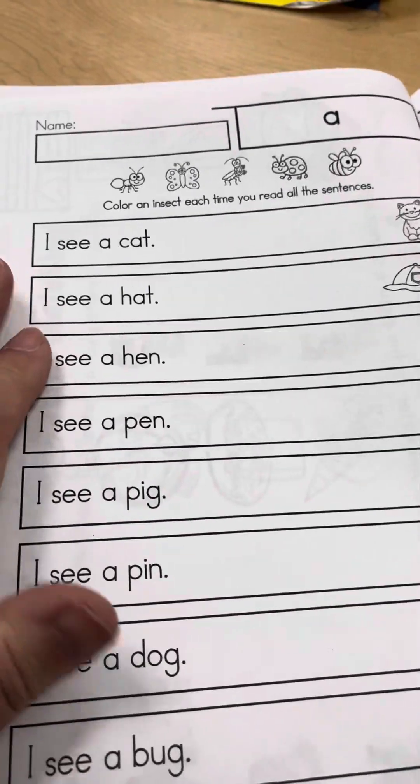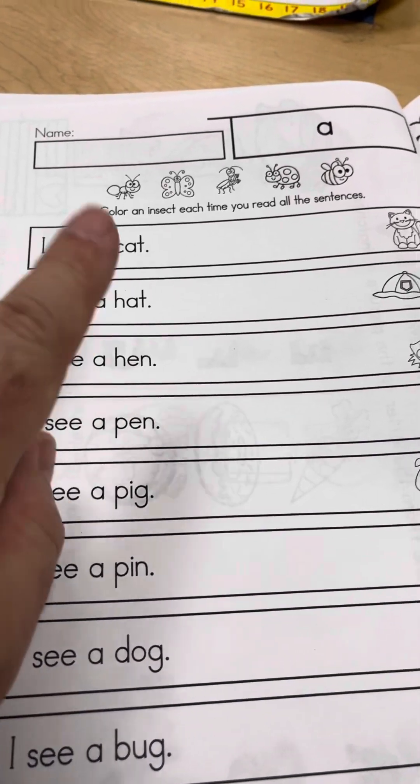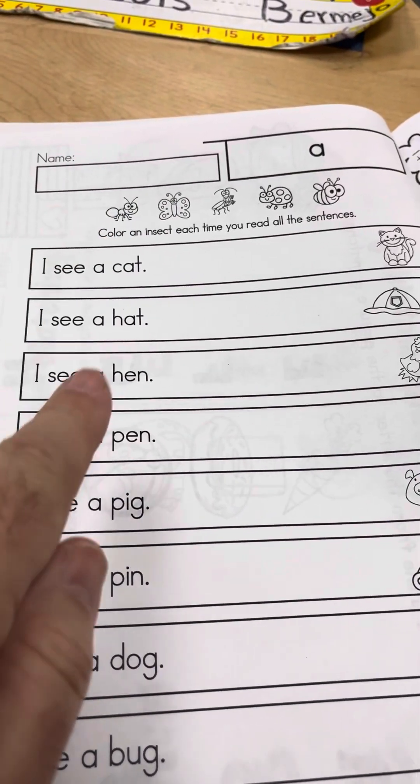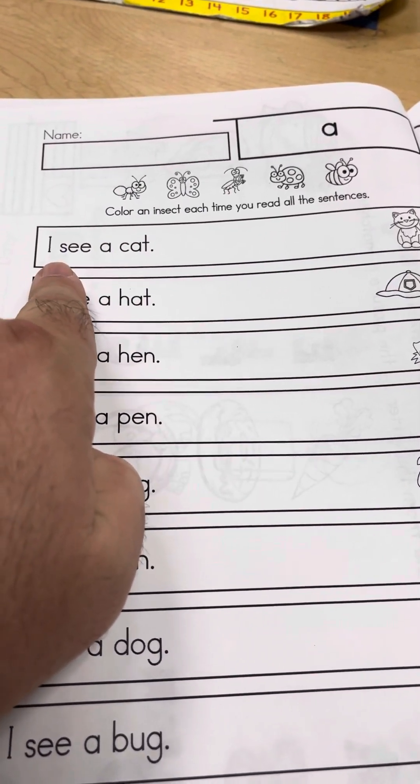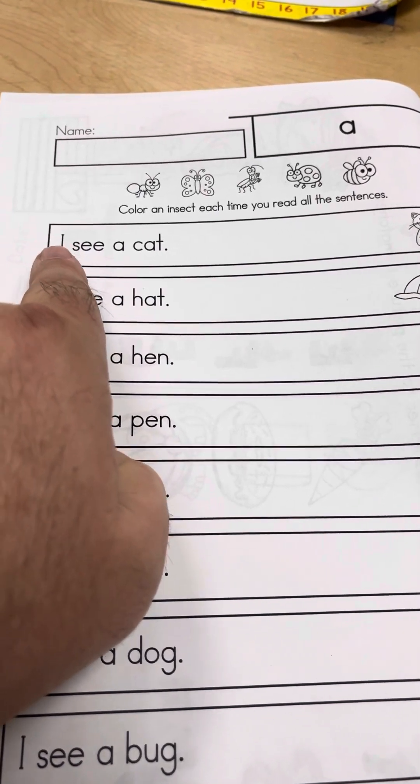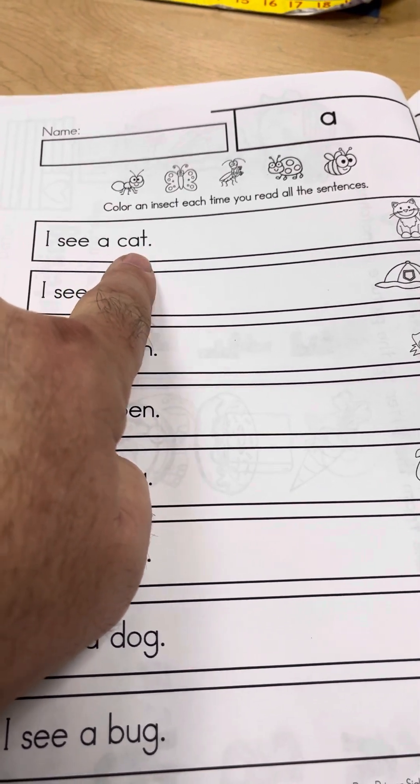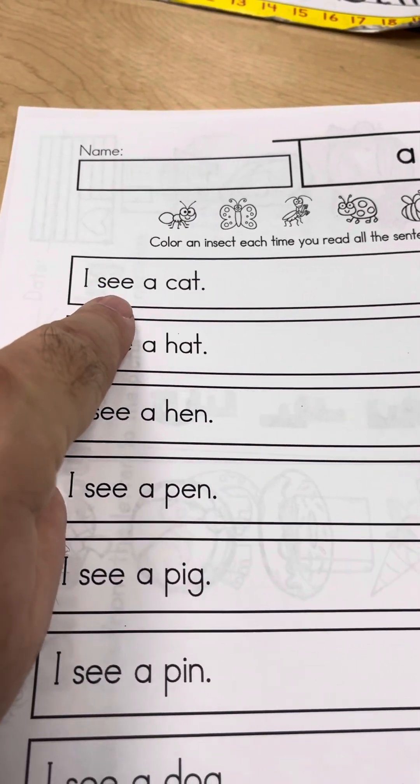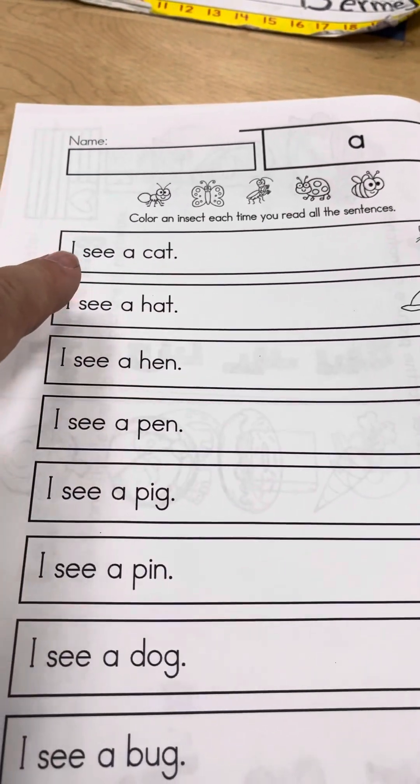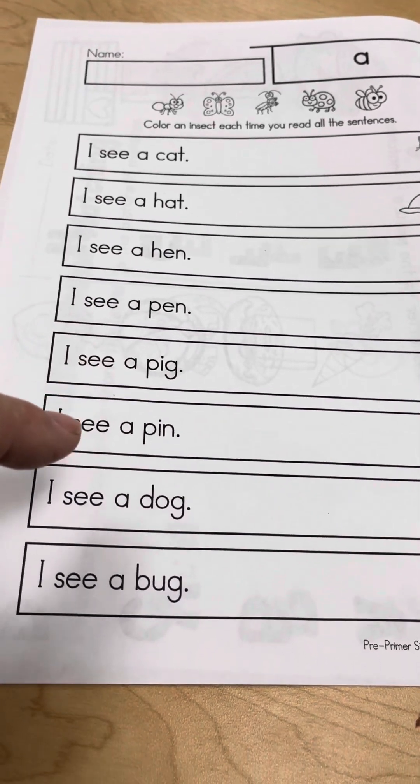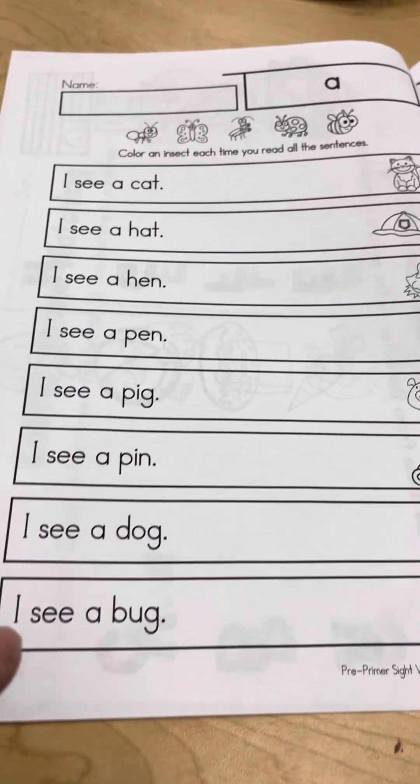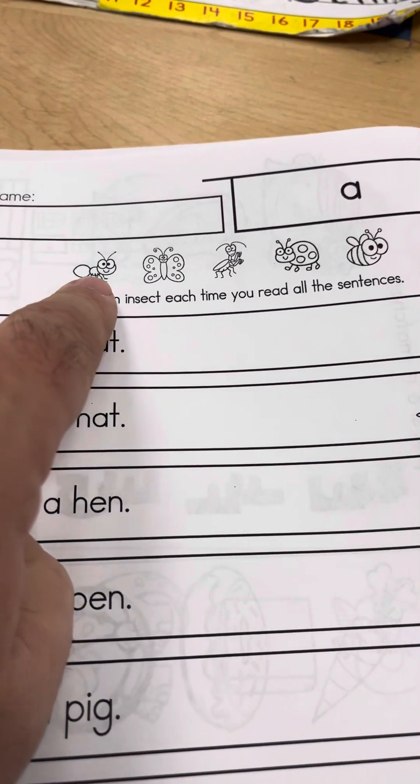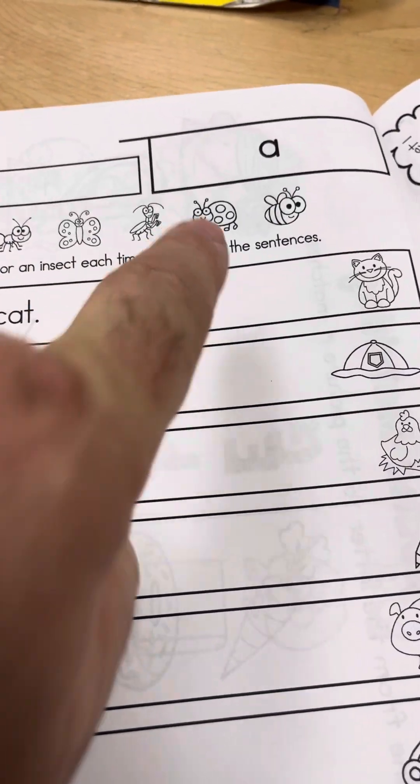This is cool. So once every day, they're going to sit with you and they're going to read these sentences. I see a cat. And it's really important that they point to each word as they say it. So once per day, please have them read you all these sentences.